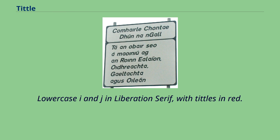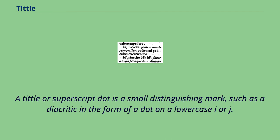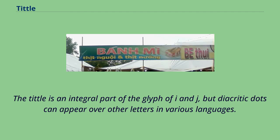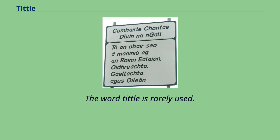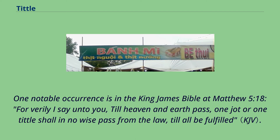A tittle, or superscript dot, is a small distinguishing mark such as a diacritic in the form of a dot on a lowercase i or j. The tittle is an integral part of the glyph of i and j, but diacritic dots can appear over other letters in various languages. In most languages, the tittle of i or j is omitted when a diacritic is placed in the tittle's usual position, but not when the diacritic appears elsewhere. The word tittle is rarely used.